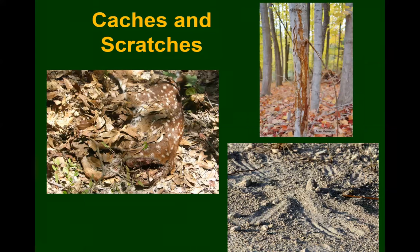Bobcat scat is typically constricted and segmented with blunt ends, and dry scat usually falls apart at the constrictions. You'll find their sign in habitat with dense cover, especially areas with rocky ledges needed for breeding. The track is significantly smaller than a mountain lion track, which is about four inches wide. Signs of predatory cats in the area include cached food — the cat covers prey with leaves or sticks and returns to eat more. They also scratch at the ground and leave claw marks on trees, using them like scratching posts.